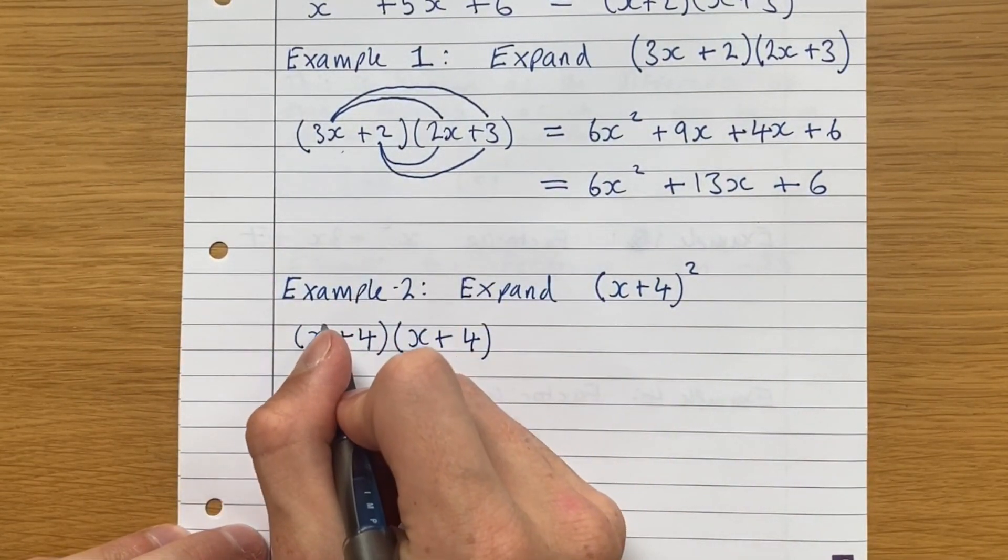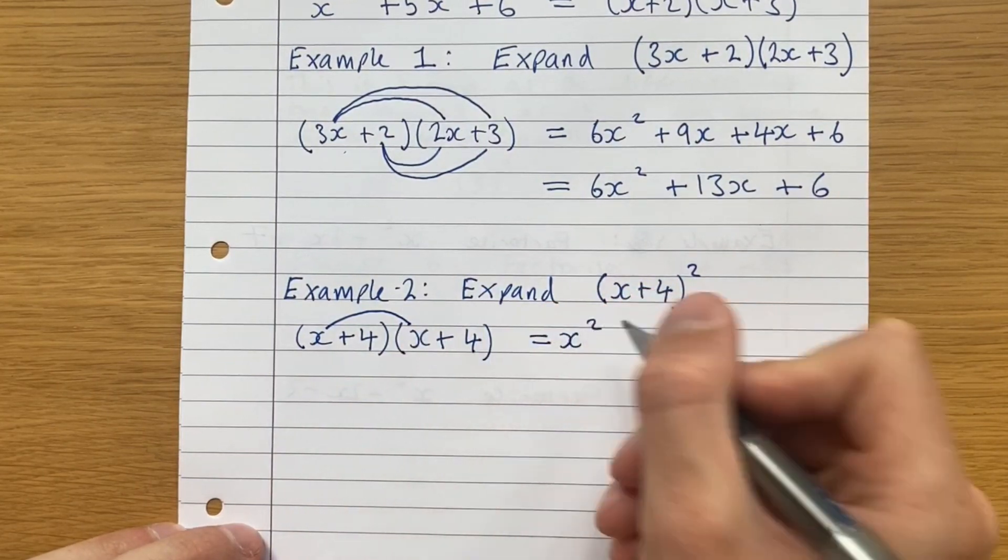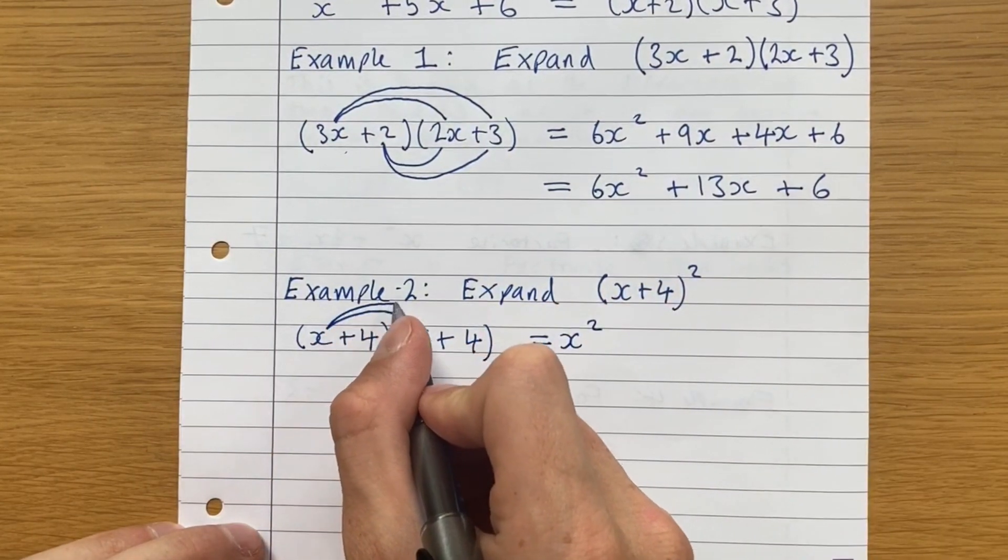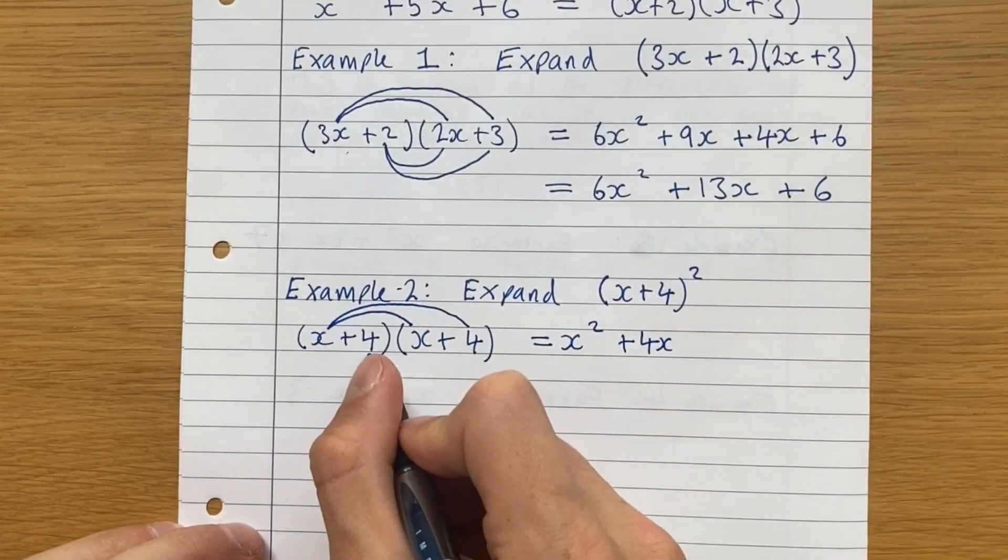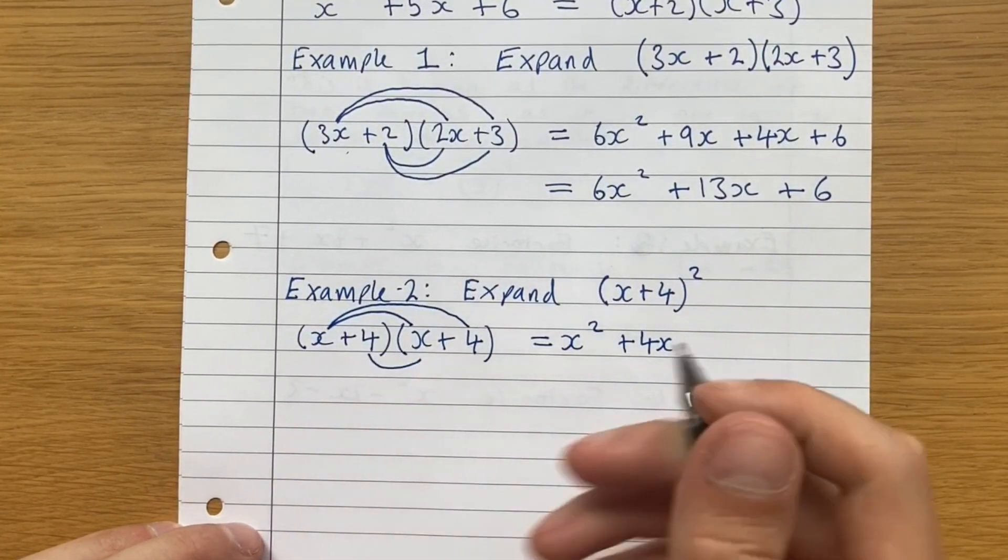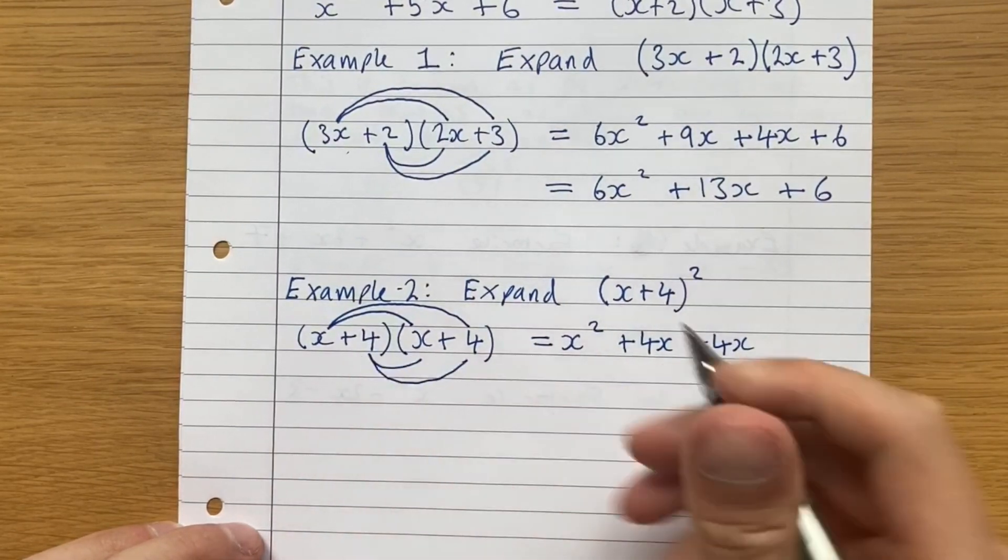We draw a little beak, if you like. x times x is just x squared. And now x times 4 is 4x plus another 4x plus 4 times 4, which is 16.